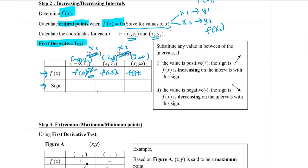If the value is positive, the sign going up means f(x) is increasing on that interval. If the value is negative, the sign going downward means f(x) is decreasing on that interval. So, positive means increasing and negative means decreasing.